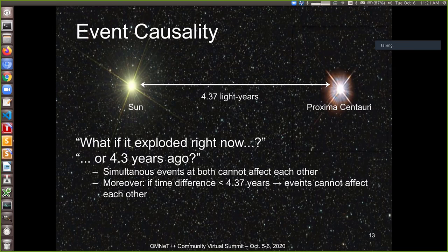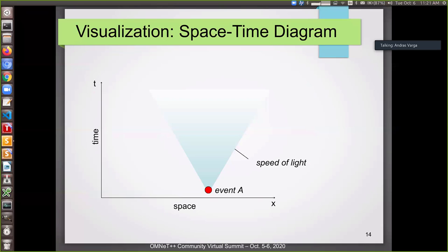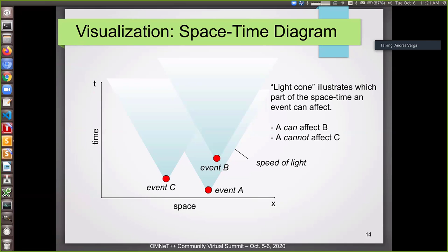But the thing is that simultaneous events will not affect each other. So if there's a distance of 4.37 light years, then if the time difference between two events is less than 4.37 years, then these events cannot affect each other. And physics has a very good way of visualizing this, which is a space-time diagram. So on the horizontal axis, you have space. On the vertical axis, you have time. And then at approximately 45 degrees angle, which is 60 degrees angle on this slide, you have the speed of light. And basically, which means that anything which is inside that cone can be affected by this event, event A. And anything outside cannot. So for example, event A can affect event B. But event C is completely independent. There's no way they can affect each other.